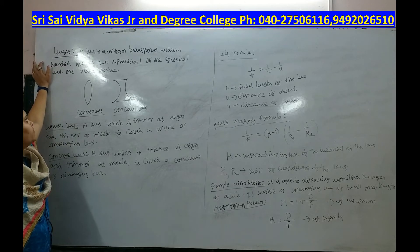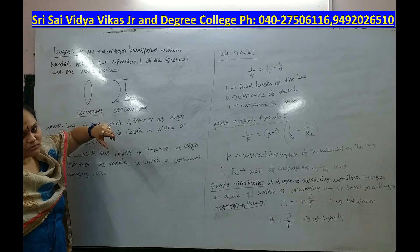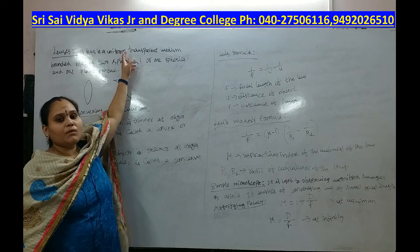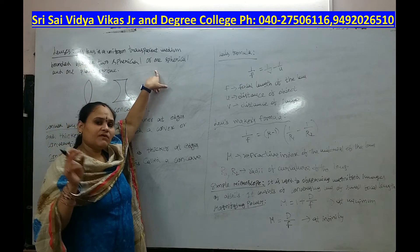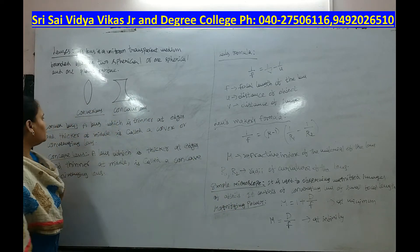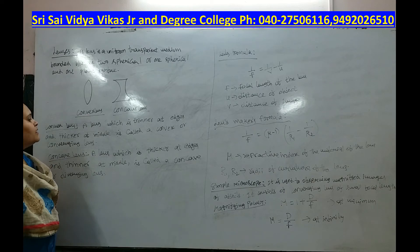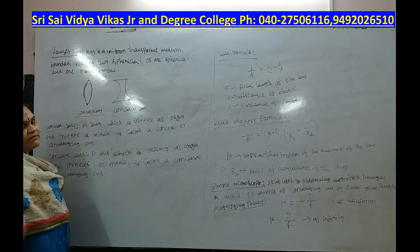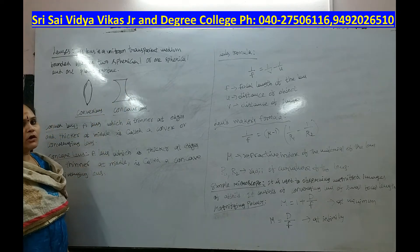What is meant by a lens? A lens is a transparent medium bounded between two spherical surfaces, or one spherical surface and one plane surface. We have two different types of lenses. A convex lens is thinner at the edges and thicker at the middle. A concave lens is thicker at the edges and thinner at the middle.